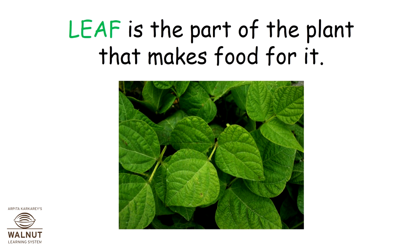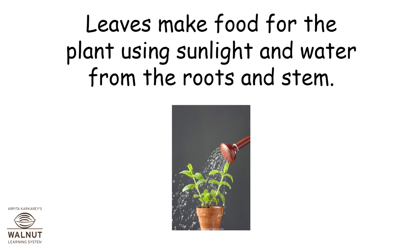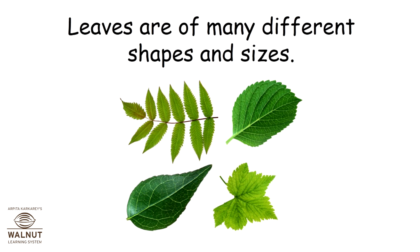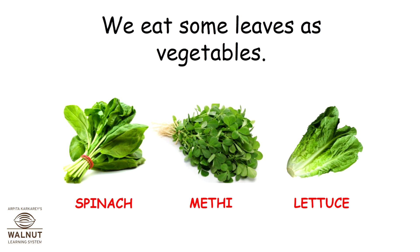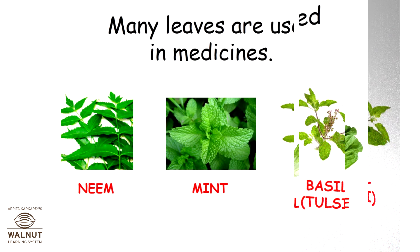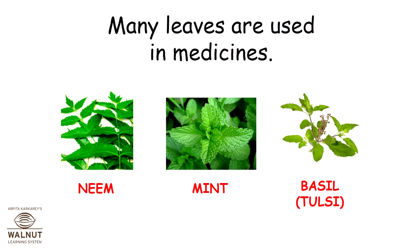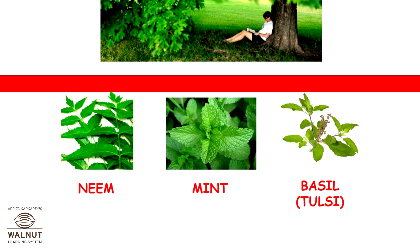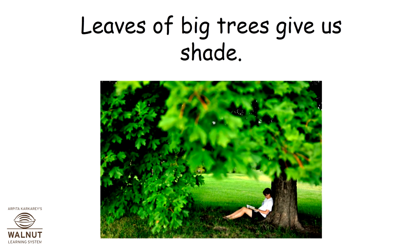Leaf is the part of the plant that makes food for it. Leaves make food for the plant using sunlight and water from the roots and stem. Leaves are of many different shapes and sizes. We eat some leaves as vegetables. Many leaves are used in medicines. Leaves of big trees give us shade.